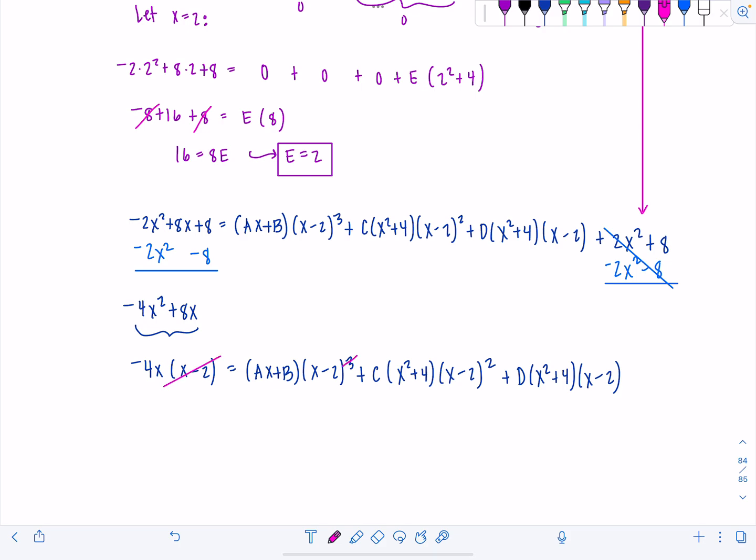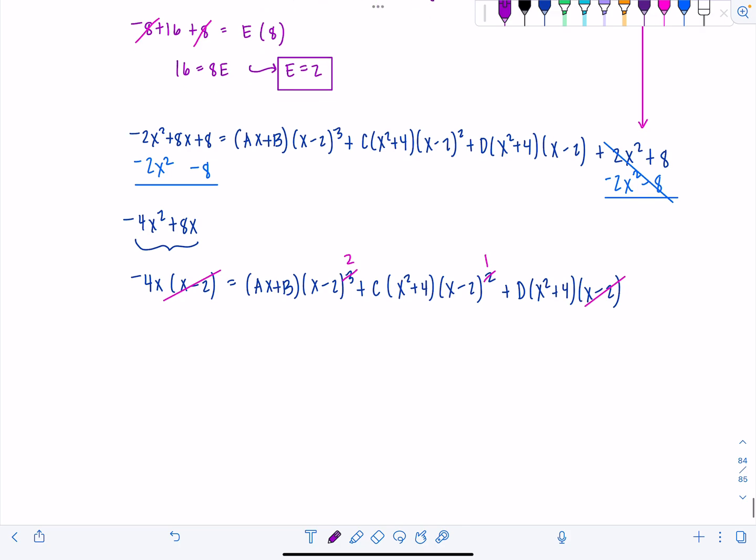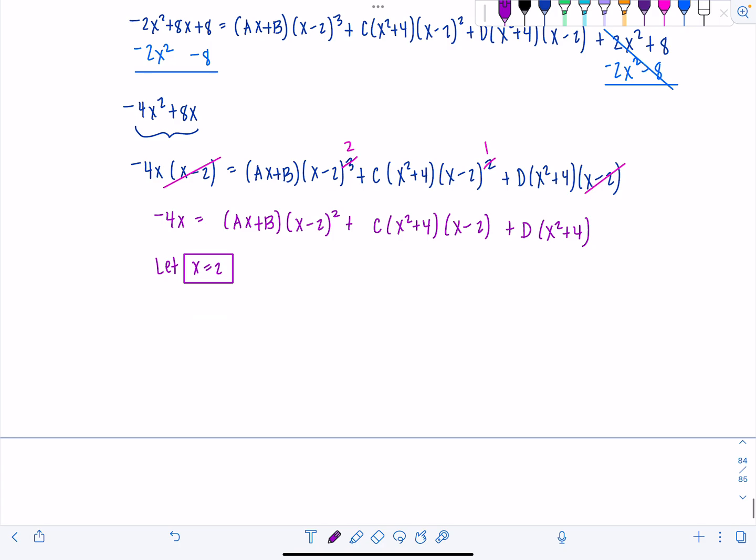And we can repeat the process again where I'm going to let x equal 2. So right now we have negative 4x equals ax plus b times x minus 2 squared, c times x squared plus 4, x minus 2, and then d times x squared plus 4. And then now we're going to repeat the process. So let x equal 2. And let's see what happens. So on the left hand side, that's negative 4 times 2, 0 plus 0 plus d times 2 squared plus 4. So now we have negative 8 equals 8d. So d is negative 1.